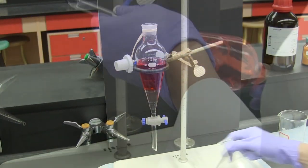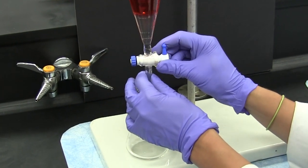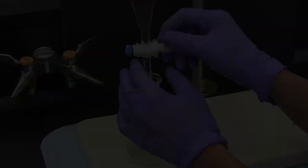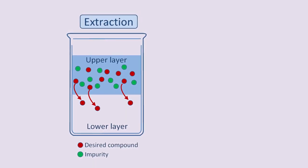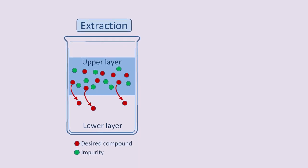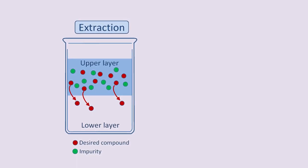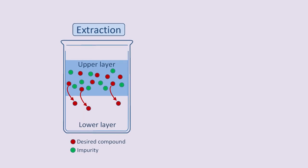An important requirement is that the two solvents must be immiscible, so that they form two separate layers, as we see here in this diagram. And for the extraction process to be selective, the desired compound must be considerably more soluble in the second solvent than in the first, and the impurities must be insoluble in the second solvent.